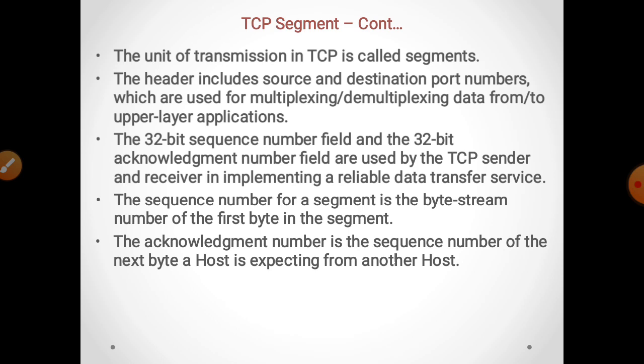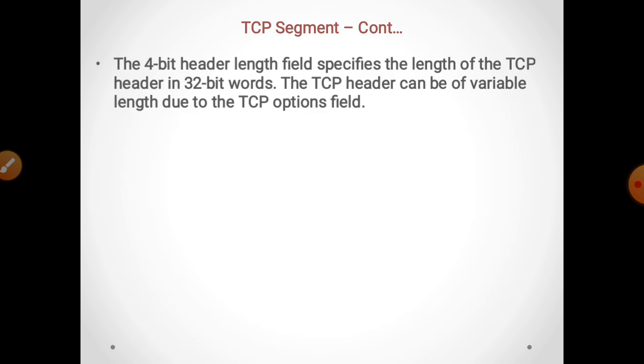The acknowledgement number is the sequence number of the next byte a host is expecting from another host. The 4-bit header length field specifies the length of the TCP header in 32-bit words. The TCP header can be of variable length due to the TCP options field.